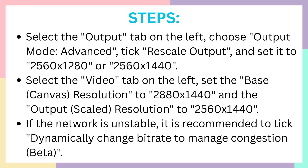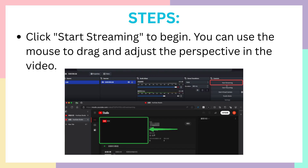Set the rescale output to 2560 x 1280 or 2560 x 1440. Then select the Video tab on the left and set the base resolution to 2880 x 1440 and the output resolution to 2560 x 1440. If the network is unstable, it is recommended to dynamically change the bitrate to manage congestion. Finally, click Start Streaming to begin. You can use the mouse to drag and adjust the view position in the video as well.